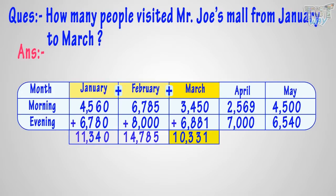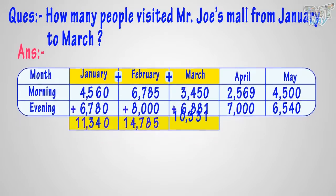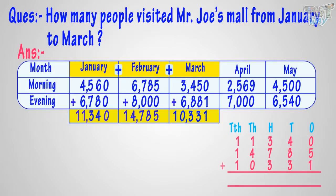Now we have all the figures. January: 11,340 people. February: 14,785 people. March: 10,331 people. Now we will add them up to get the total number of people that visited the mall from January to March.